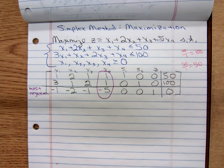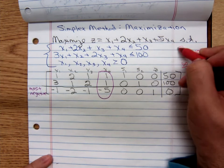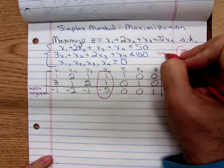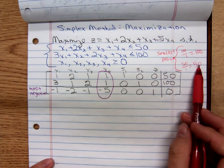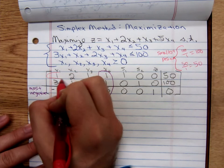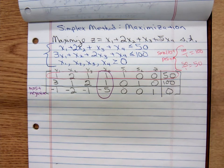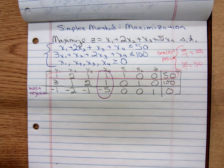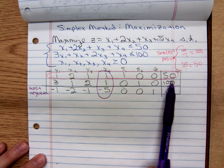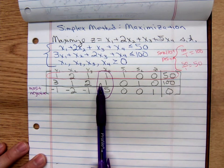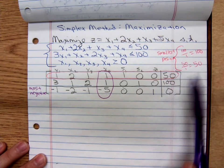Which one of those do we use? For the quotient, you choose the smallest positive quotient. The smallest positive is 50, so that's going to be our pivot row.